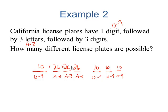So, we want to multiply these seven numbers, and using the calculator, that's four hundred fifty-six million, nine hundred seventy-six thousand license plates.